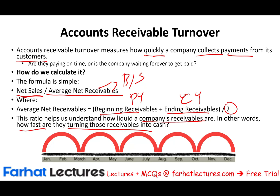For example, a company makes a sale and collects it around March, then makes another sale and collects it in June, then another sale collected around August, one in August collected in October, and whatever they made in late October collected in December. This tells us that the receivable was turned over five times.